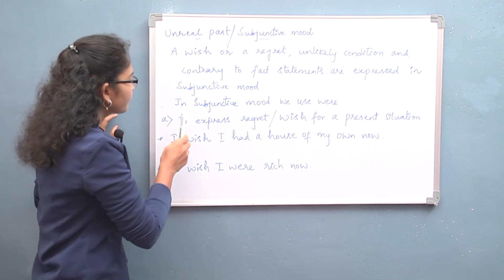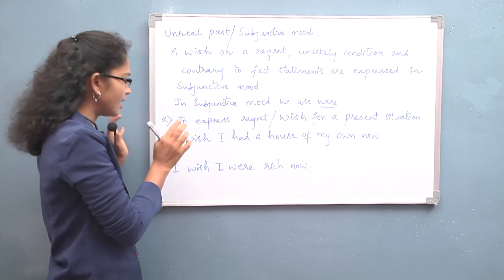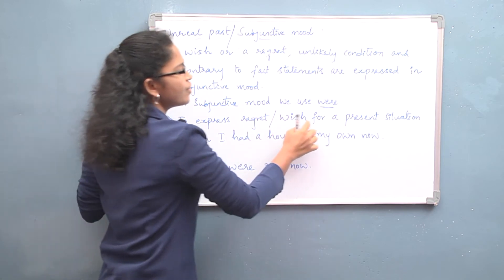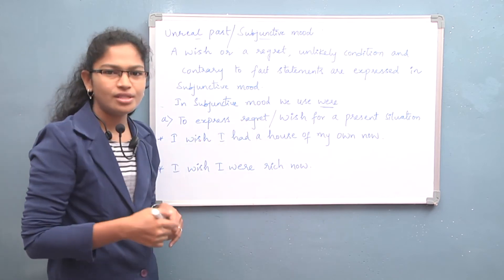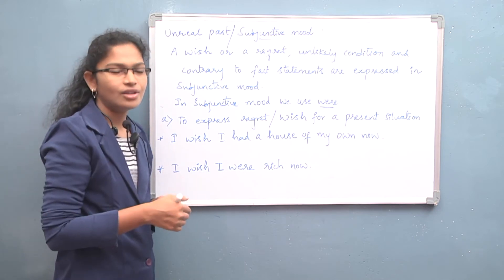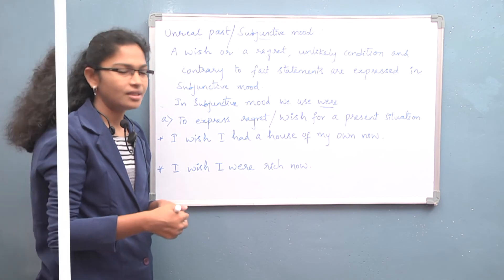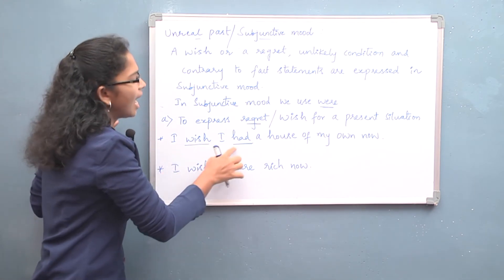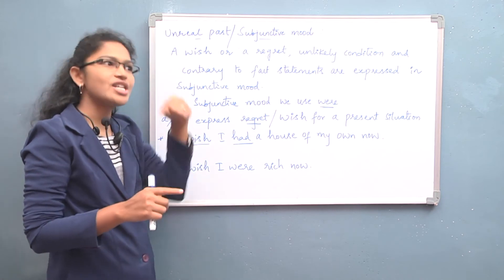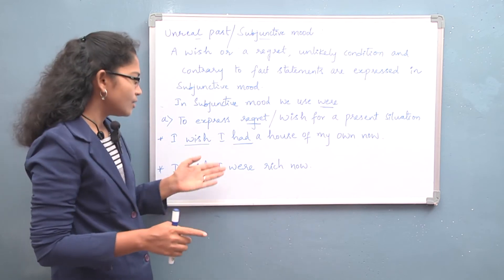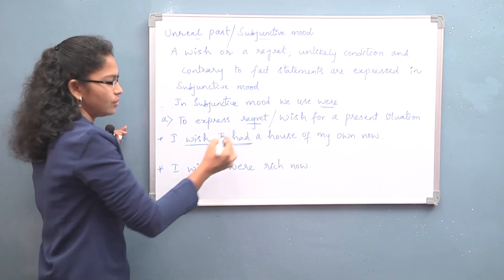In subjunctive mood, 'were' is used in place of 'was'. The first case is to express regret or a wish for a present situation. Example: 'I wish I had a house of my own now.' The person does not have a house — he is expressing the wish 'I wish I had.' Another example: 'I wish I were rich now.' He is not rich, but he wishes he were. 'Were' is used instead of 'was' here.